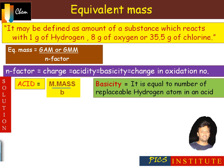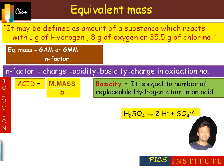For example, in the case of HCl, only one hydrogen is replaceable, so its basicity is 1. Whereas in the case of sulfuric acid, two hydrogens are replaceable, so its basicity is 2.